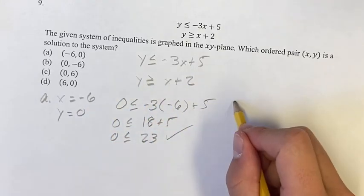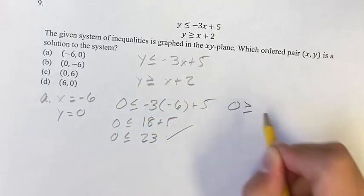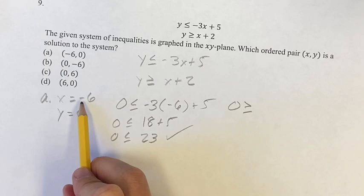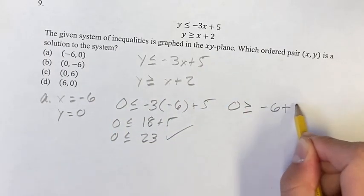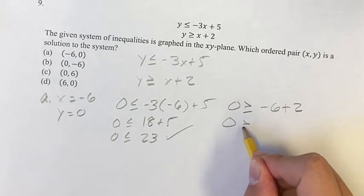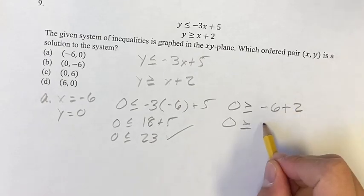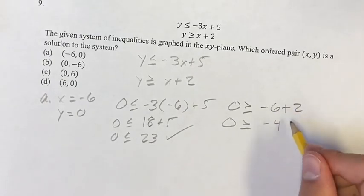y is 0 is greater than or equal to this time. x plus 2 would be negative 6 plus 2. Going through, we have 0 is greater than or equal to, negative 6 plus 2 is negative 4. This is also true.